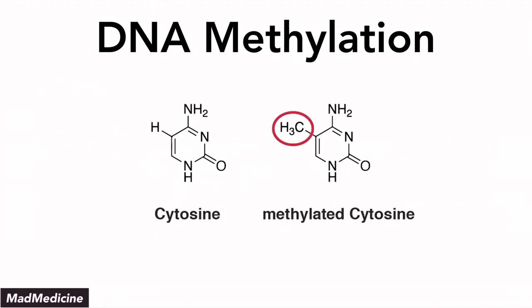This right here is your normal cytosine base. When you add a methyl group right here, you are essentially causing this nitrogenous base to change — it becomes the methylated form, which is something that is very difficult to replicate with. So let's talk about DNA methylation a little bit more.